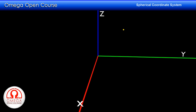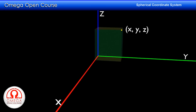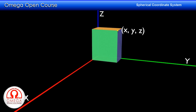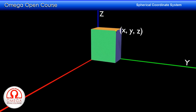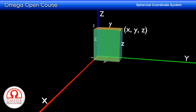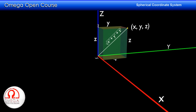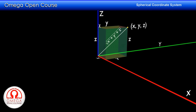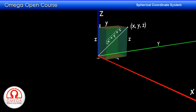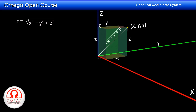Now let us convert Cartesian coordinates x, y, z into spherical coordinates. If you draw a cuboid with three of its edges along the axes and one vertex on the point, then the width of the cuboid is x, its length y, and height z. The first spherical coordinate is the distance of the point from the origin, which is the same as the length of the body diagonal of the cuboid. The length of the body diagonal is the square root of x² + y² + z². Thus the value of parameter r for the point is √(x² + y² + z²).